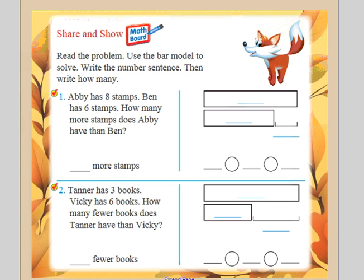Number 1, Abby has 8 stamps. This is important that you know that. Ben has 6 stamps. How many more stamps does Abby have than Ben? I know I see a big box and a little box. So I'm going to put the largest number, which is 8, in the big box and I'm going to label it A for Abby. And then 6 stamps is how many Ben has. I know that's less, so that's B for Ben.